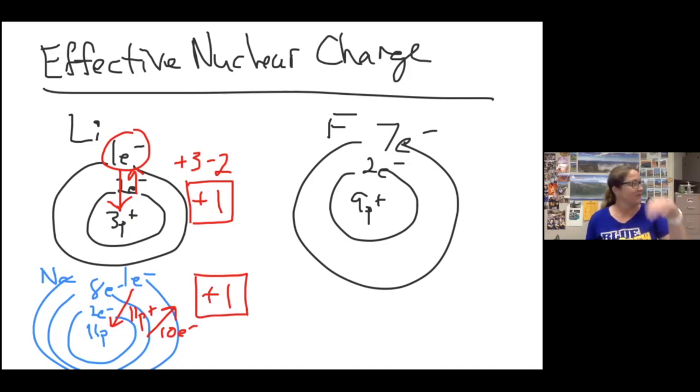Everything in group one, lithium, sodium, potassium, rubidium, francium, cesium, not in that order, but all have an effective nuclear charge of plus one.